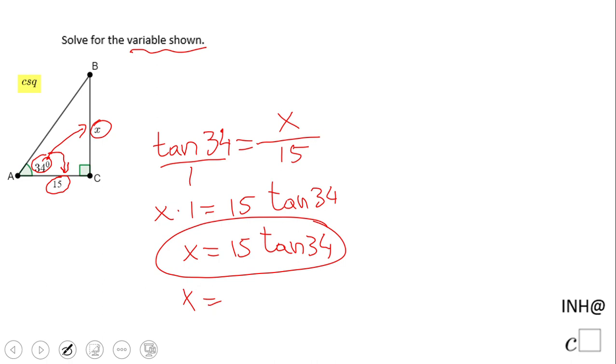And you're going to put 15 times tangent of 34. Be sure your calculator is in degree mode, and you should get 10.11762775. Most of the time you are not going to need all these decimals; you're going to need an approximation.